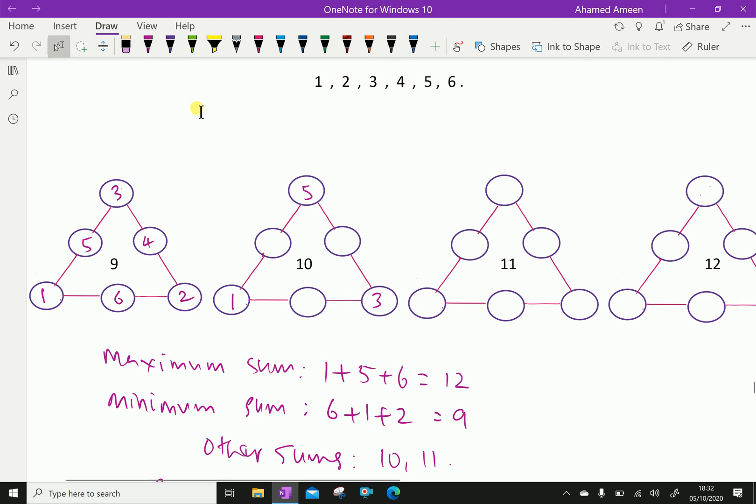Now, 1 plus 3 is 4, 10 minus 4 is 6. Here, 3 plus 5 is 8, so 10 minus 8 is 2. Then, 1 plus 5 is 6, so 10 minus 6 is 4.